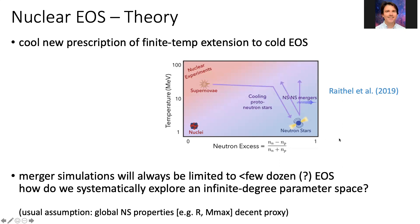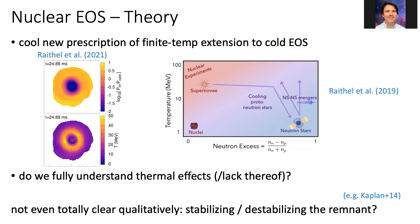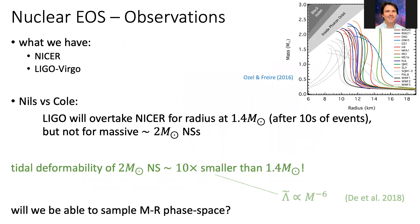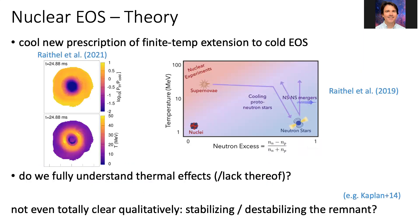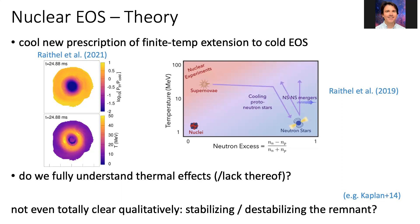Scott: Earlier you said post-merger evolution will probe the hot, massive sector. That's not like quark-gluon plasma regime, right? — Ben: No, no. This is hotter than cold — we're talking about tens of MeV, which means you can't completely ignore the thermal pressure — but this is nowhere near quark-gluon plasma.